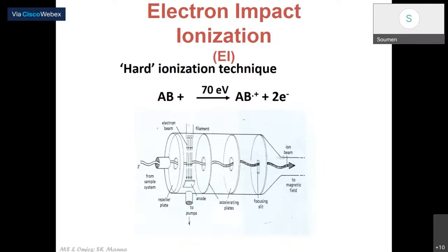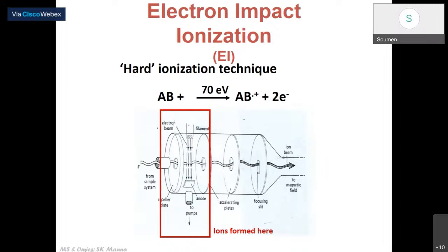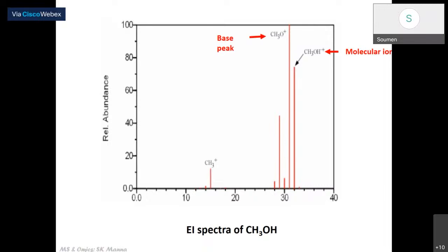In most GC-MS instruments present nowadays, you have a quad or TOF analyzer. This is where the ions are formed. Methanol dot plus is exactly the same mass as the molecule — you basically get the parent molecule mass, and this is called the molecular ion. The highest peak is called the base peak. This is standard nomenclature used across the board, whether it is ESI or whatever. Directly produced from the molecule through the ionization process is the molecular ion; the highest peak is called the base peak.